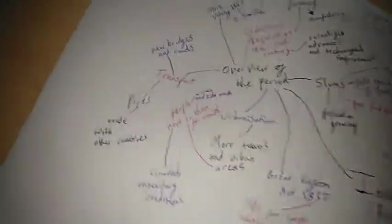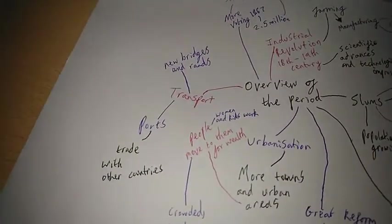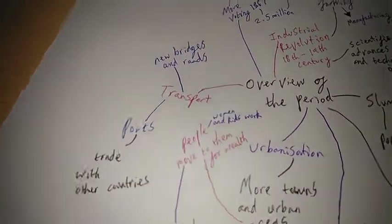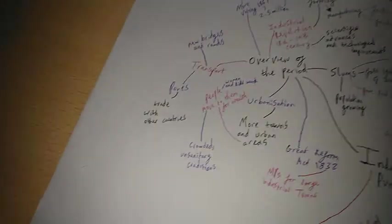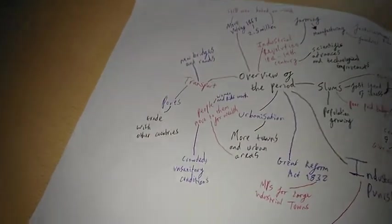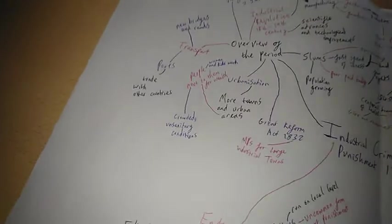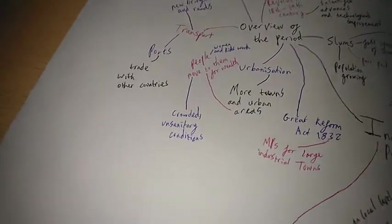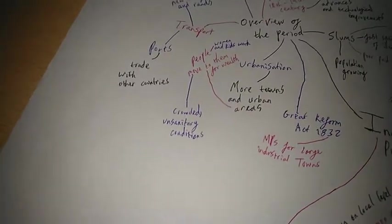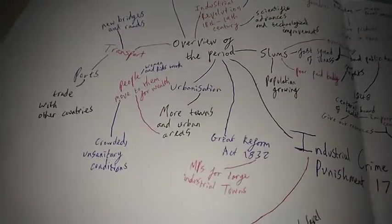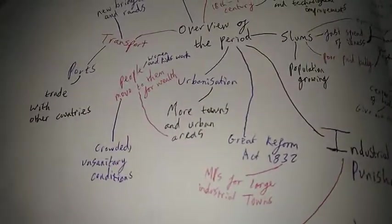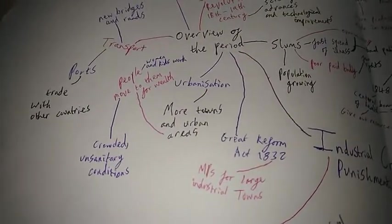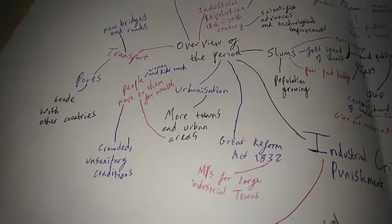Prime example of the Industrial Times being books such as Oliver Twist which show the impact on young children and poor people in that time. Next, overview of transport. New bridges and roads were created and ports were created which allowed trade with other countries. This is when the explorers went out and the empire was created which established a lot of trade routes, really opened up our country to the rest of the world and brought new goods and commodities.